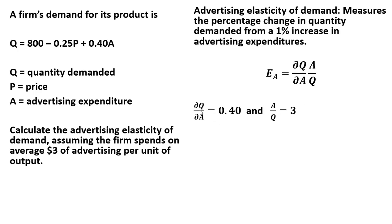So again, the partial derivative of demand with respect to advertising is the value in front of the A term. It's positive. We would expect more advertising would increase the quantity demanded, so 0.4 in this case. And A divided by Q is advertising per unit of output. You were told at the beginning that the firm spends $3 of advertising per unit of output.